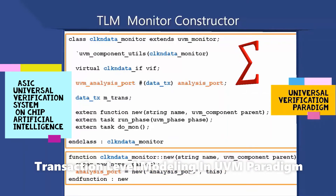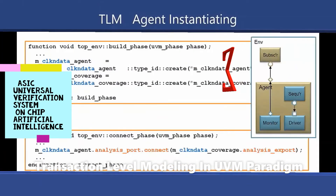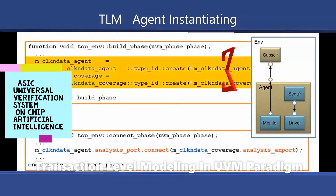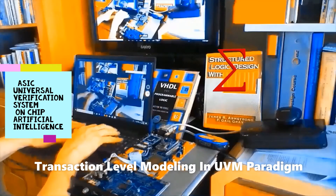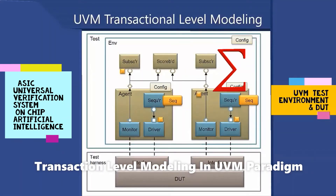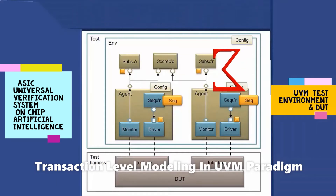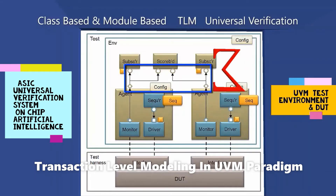Connecting transaction-level components is done with ports and exports. The actual connection between them is accomplished via the connect method in a parent component or ENV, with an argument that is the object port or export to which it will be connected. In the verification environment, a series of connect calls between ports and exports establishes a netlist of peer-to-peer and hierarchical connections, ultimately terminating at the implementation of the interface.